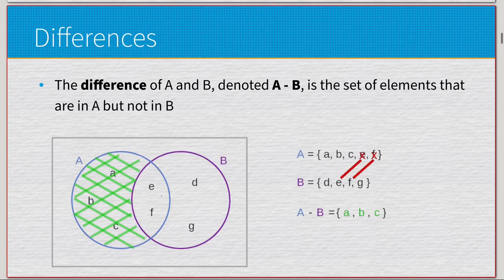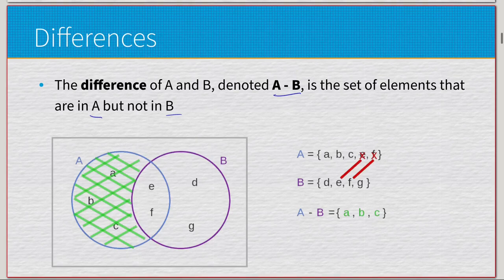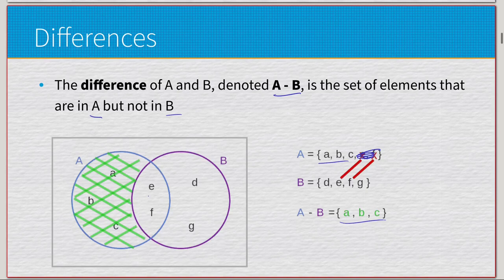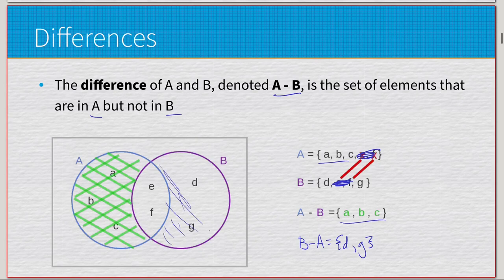Next we have differences, which is a bit more interesting. The difference of A and B, noted as A minus B, is the set of elements in A but not in B. With A = {a, b, c, e, f} and B = {d, e, f, g}, we find their shared elements and remove those from A, giving us {a, b, c}. On the Venn diagram, take set A and remove the intersection. If we did B minus A instead, we'd remove the shared elements from B and end up with {d, g} — so A minus B and B minus A are not the same.